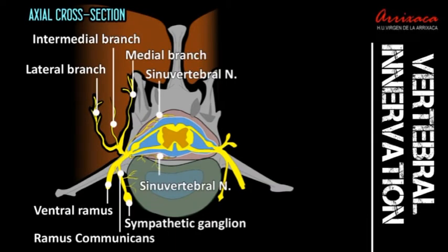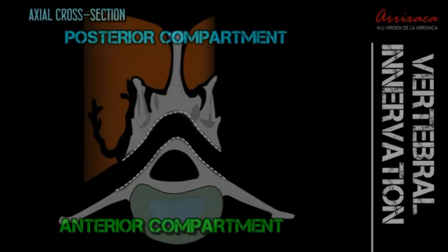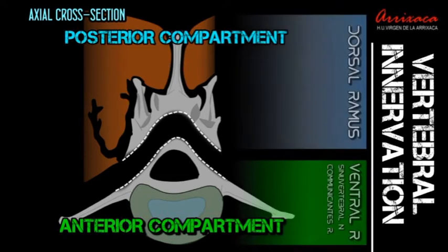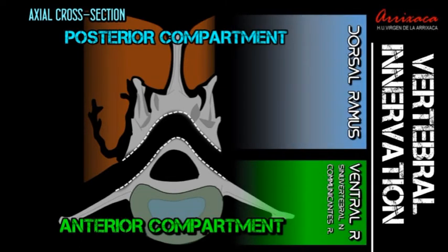Each dorsal ramus innervates the skin, the paravertebral muscles, and the posterior vertebral arch. The ventral ramus, along with the ramus communicans and the sinovertebral nerves, innervate the anterior vertebral compartment including the intervertebral discs and the vertebral bodies.